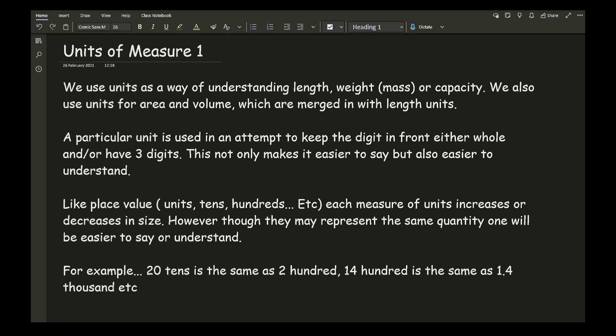For example, 20 tens is the same as 200. Although they're the same quantity, there are two different ways of saying the same thing. However, saying 200 is definitely a lot easier to say and understand than 20 tens. Also, 1400 is the same as 1.4 thousand, which again is a toss-up between which one's easier to say.